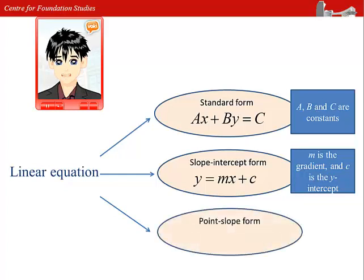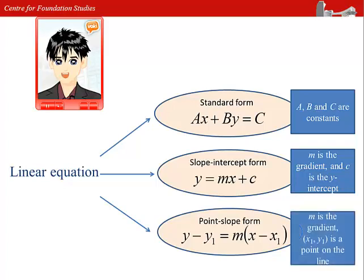The third form is the point slope form: y minus y1 equals to m multiplied with x minus x1, where m is the gradient, and x1y1 is a point on a straight line.